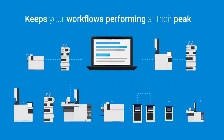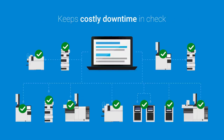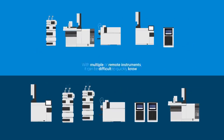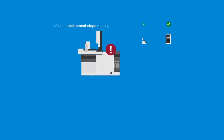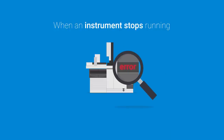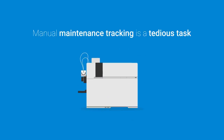Regular monitoring of your instruments keeps your workflows performing at their peak and keeps costly downtime in check. With multiple instruments or instruments that span across remote locations, it can be difficult to quickly know when an instrument has a fault condition and stops running. And you can lose valuable time before you're even aware of the problem. Manual maintenance and consumables replacement tracking can be a tedious and time-consuming task. Using lab notebooks and even sticky notes is not efficient.